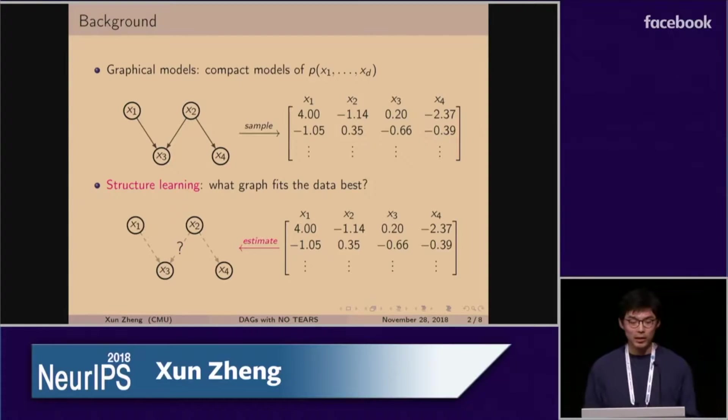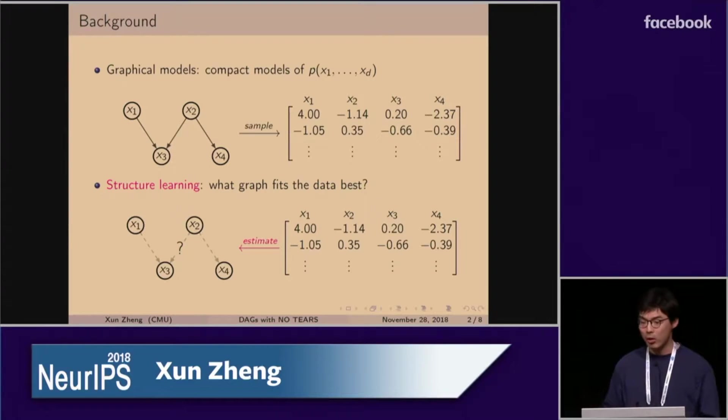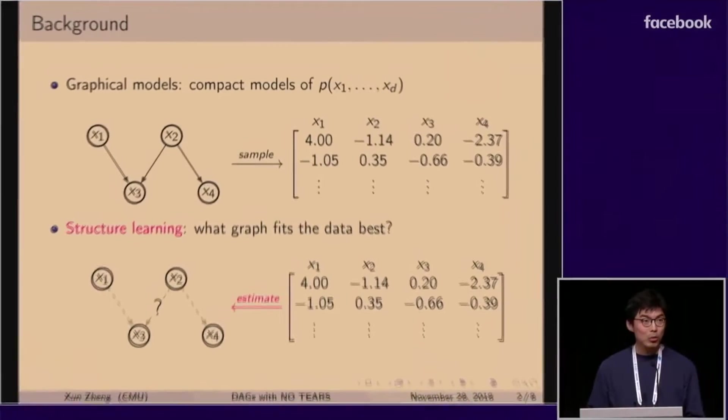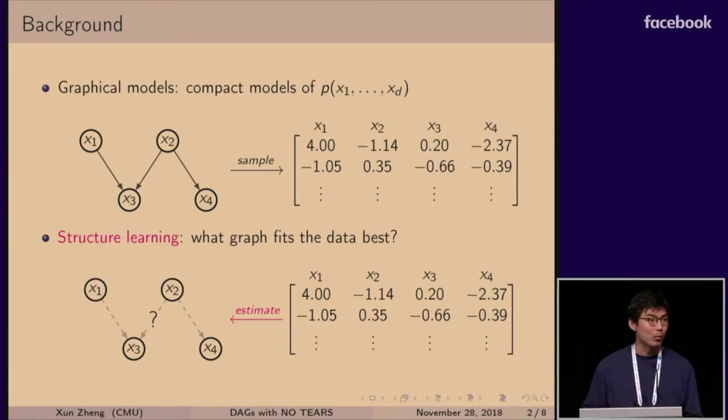So let's start with some basics. We know graphical models are compact representations of joint distributions. And in the fully observable case, once we are given the graph, we can draw samples from the graphical model. And in this paper, we're interested in the inverse problem of sampling, which is structure learning. So we're given the data, and we try to estimate the graph that fits the data best.